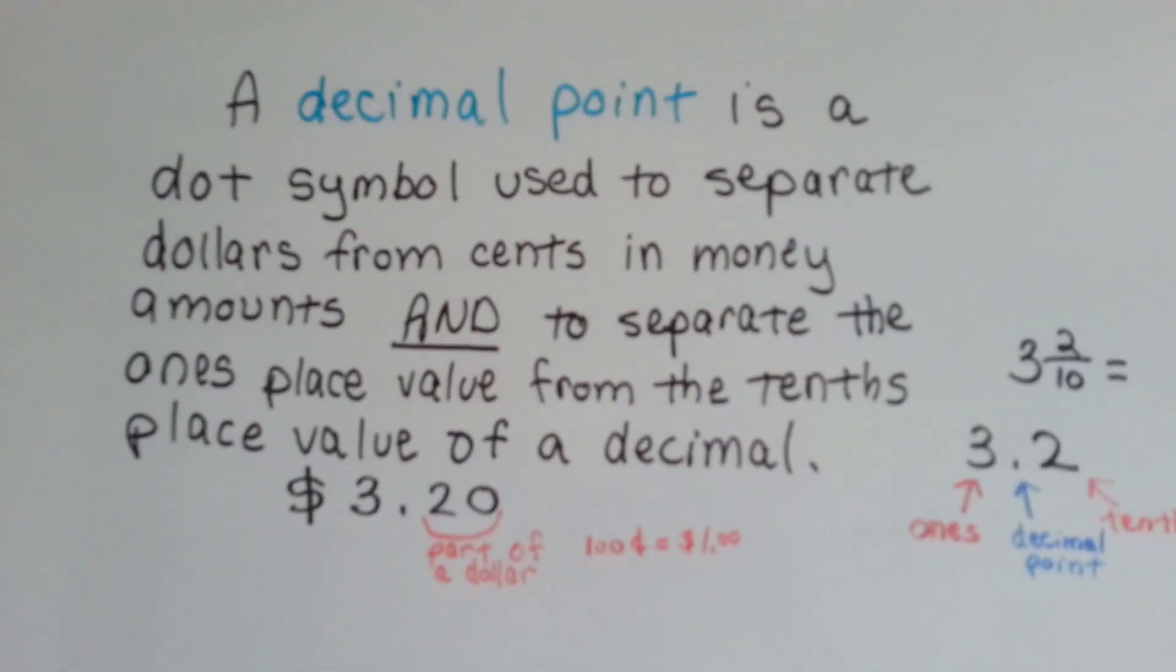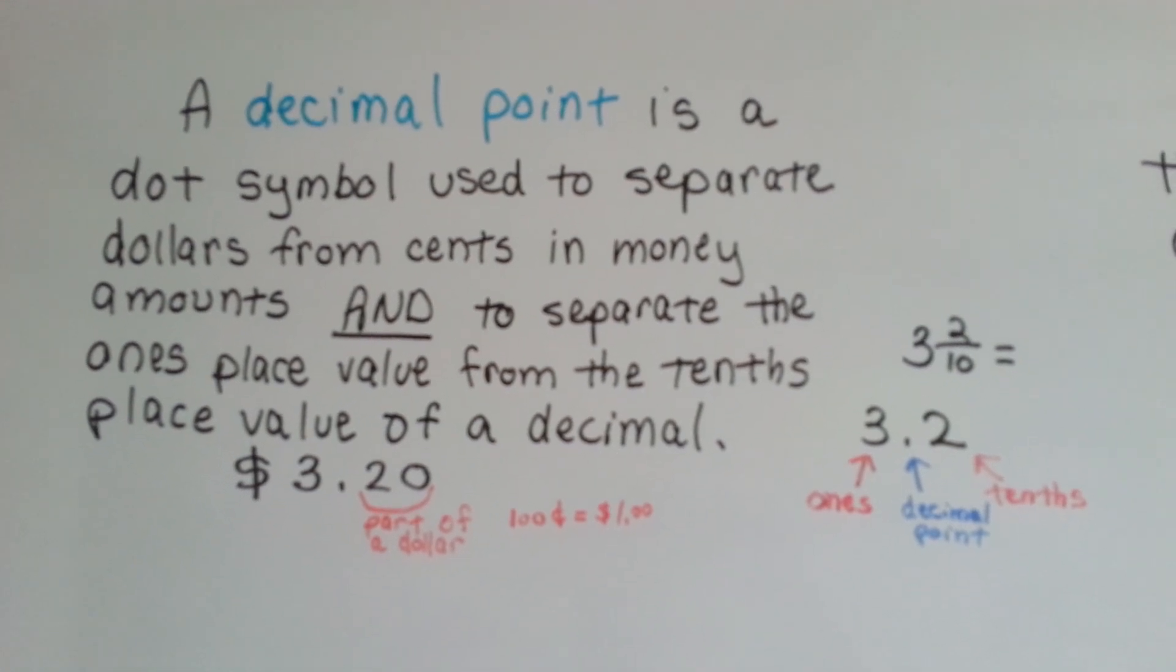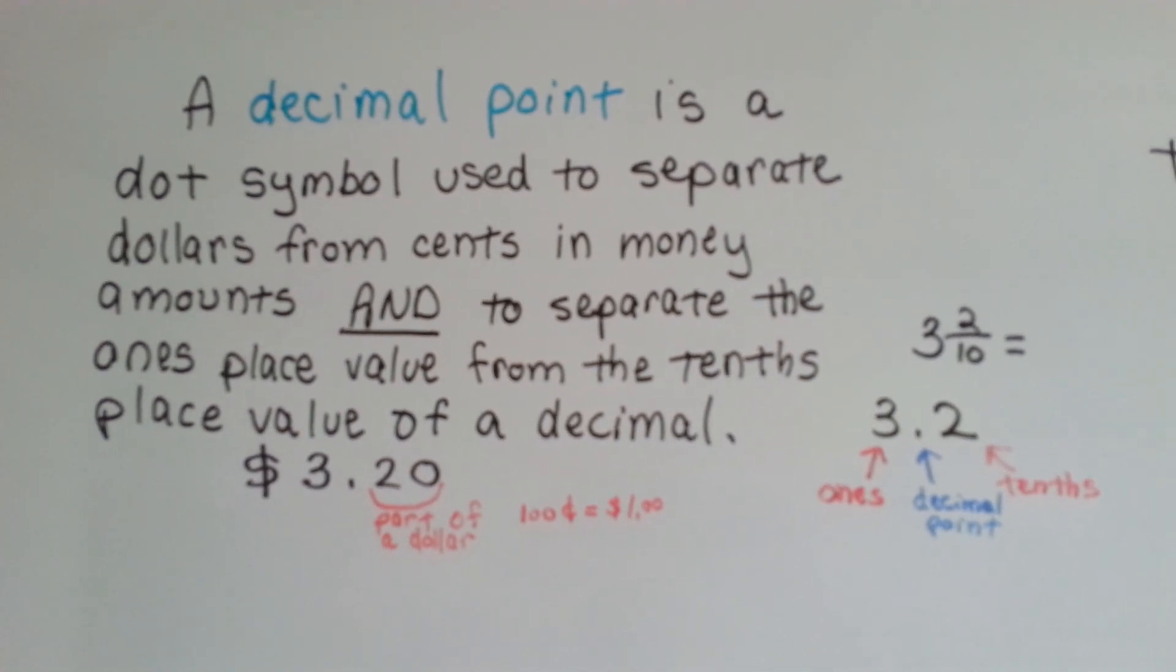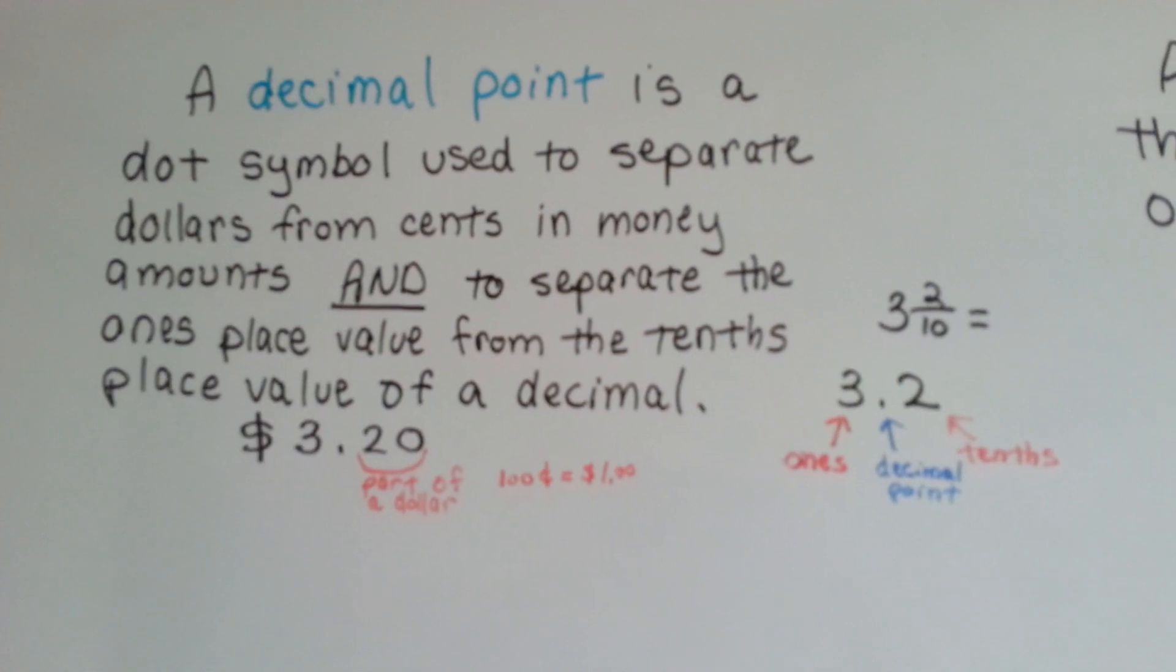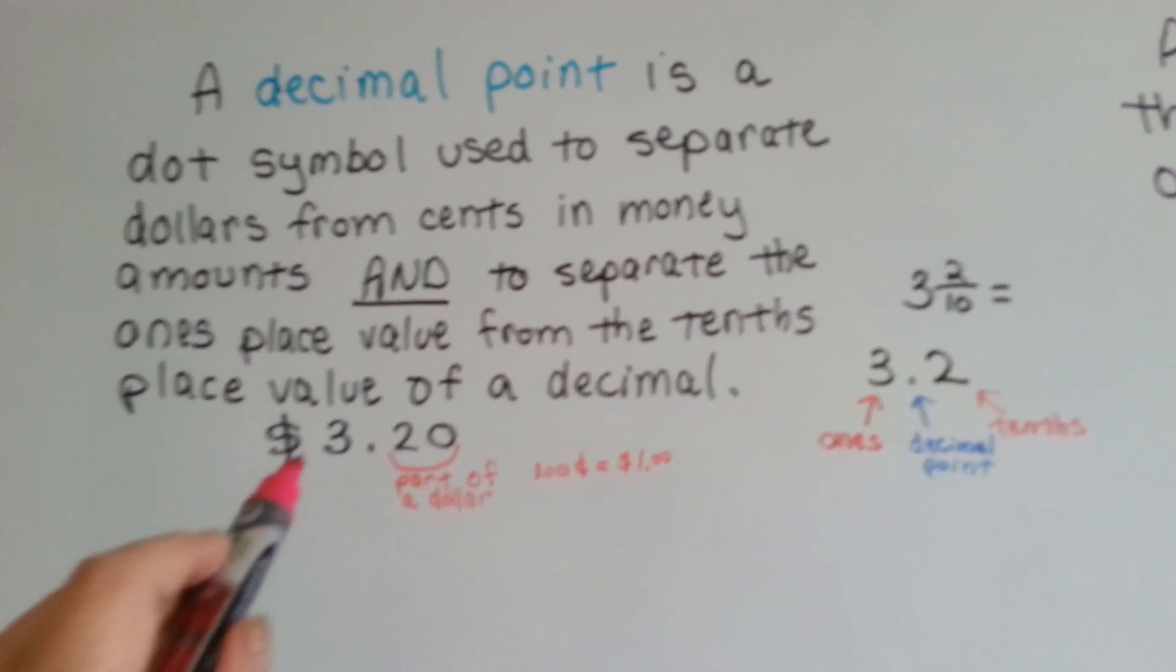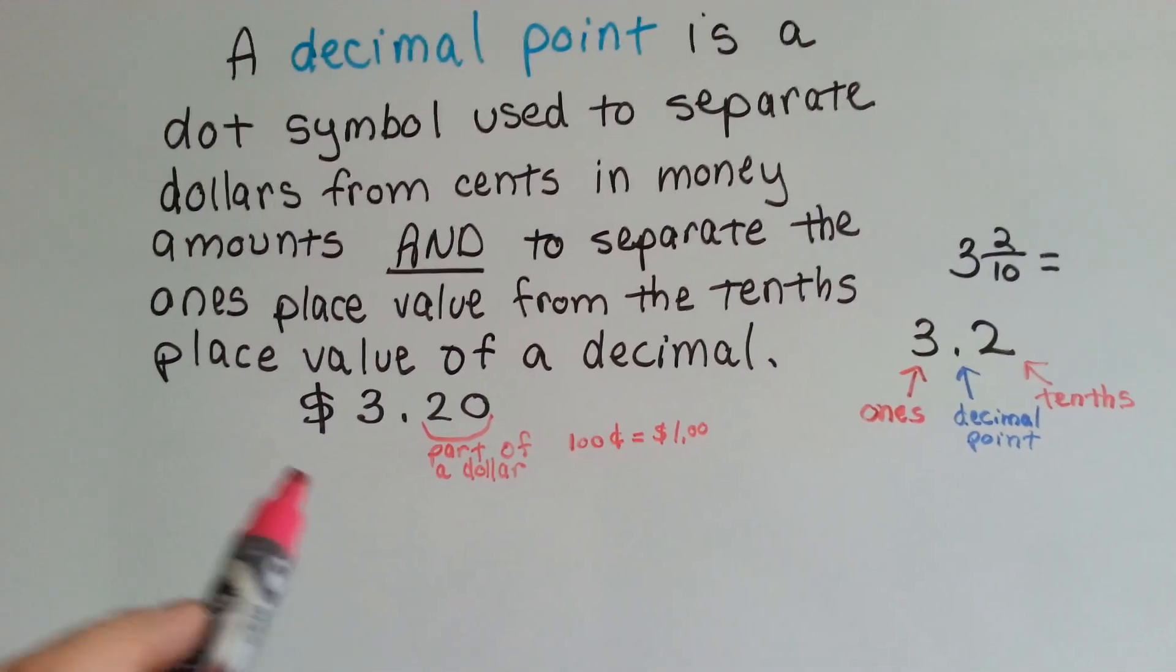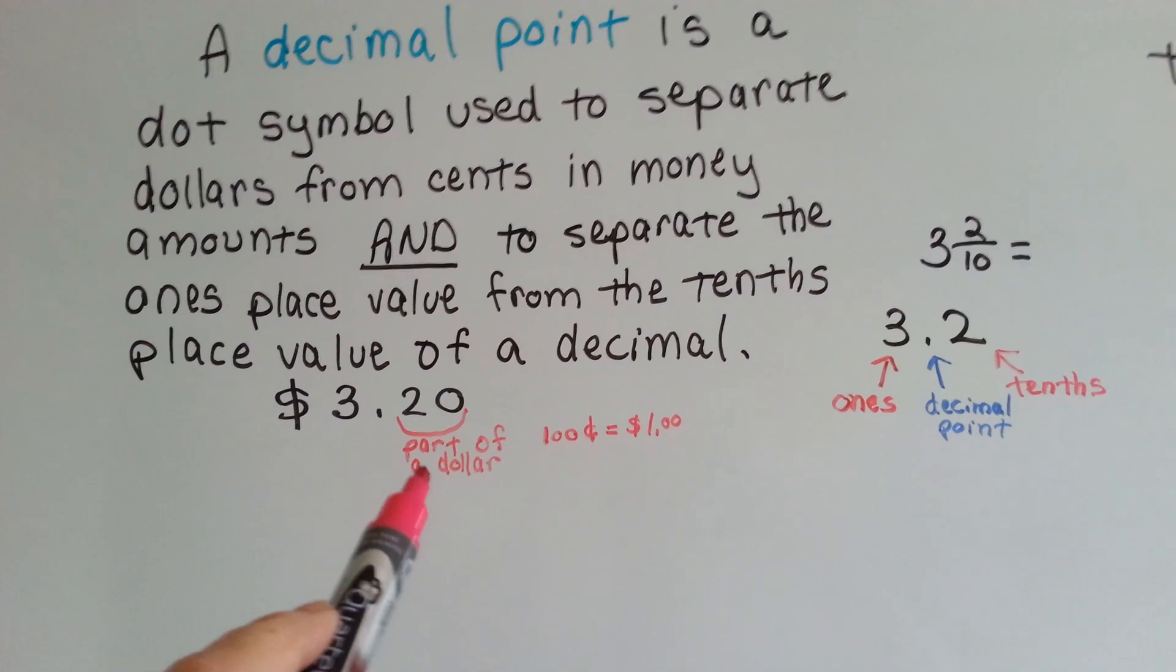A decimal point is a dot symbol used to separate dollars and cents in money amounts and to separate the ones place value from the tenths place value of a decimal. If we use money as an example, this is three dollars and twenty cents. You can see for the cents part of it, this is twenty cents, which is part of a dollar.